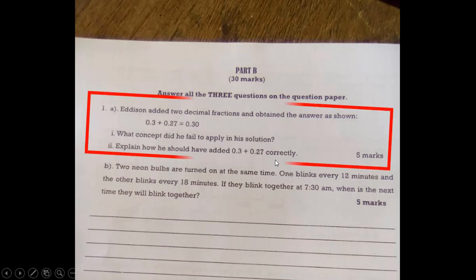We are simply going to look at the first question which is number one. Now let us not waste much time but rather delve to what the question is all about. Edison added two decimal fractions and obtained the answer as shown. So 0.3 plus 0.27 is equal to 0.30.